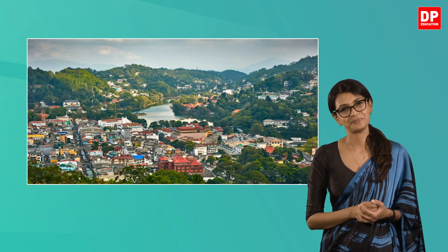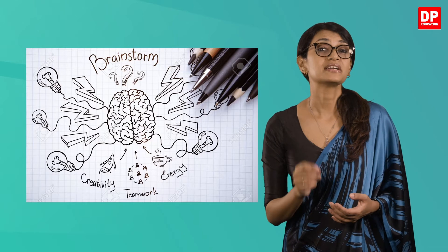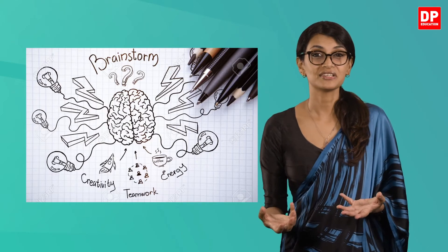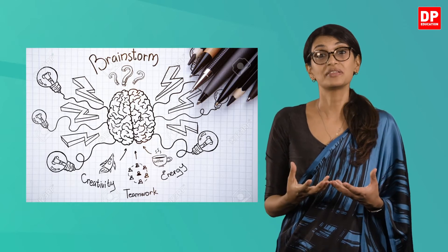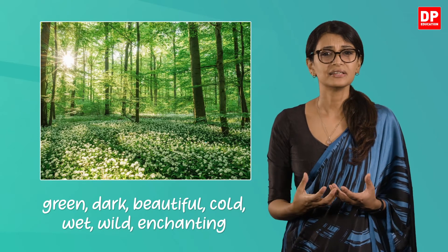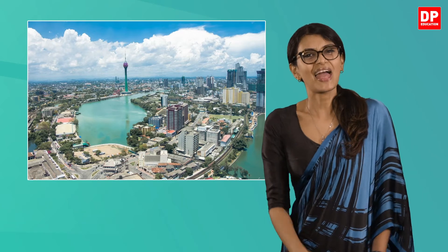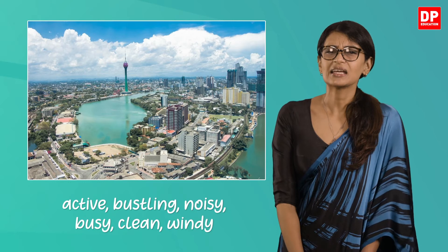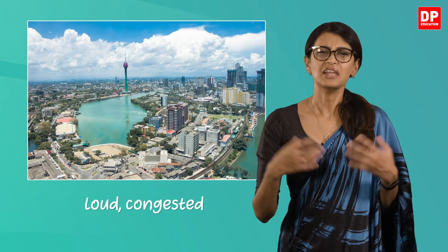Always think of qualities that are unique to the place you are describing. How do we choose the right words? Whether you are writing about the city, the forest, the coastal region or your school, you need to brainstorm and think of nouns and appropriate adjectives connected with the place. For a forest, you may use adjectives like green, dark, beautiful, cold, wet, wild, enchanting. For a city like Colombo, you can use words like active, bustling, noisy, busy, clean, windy.